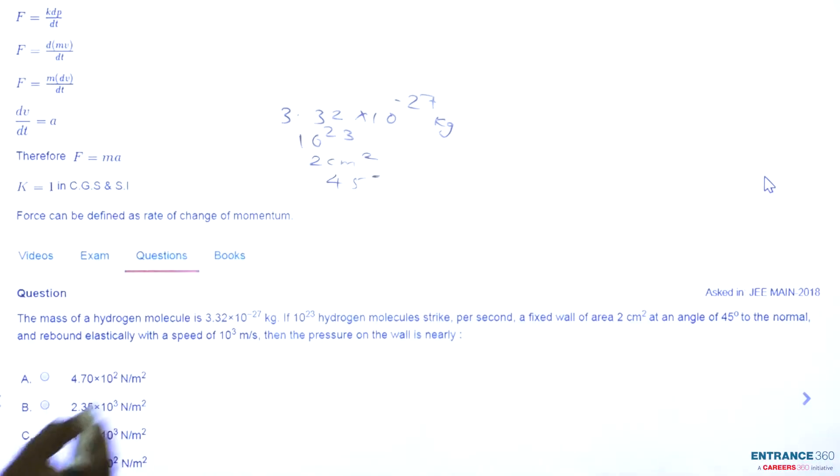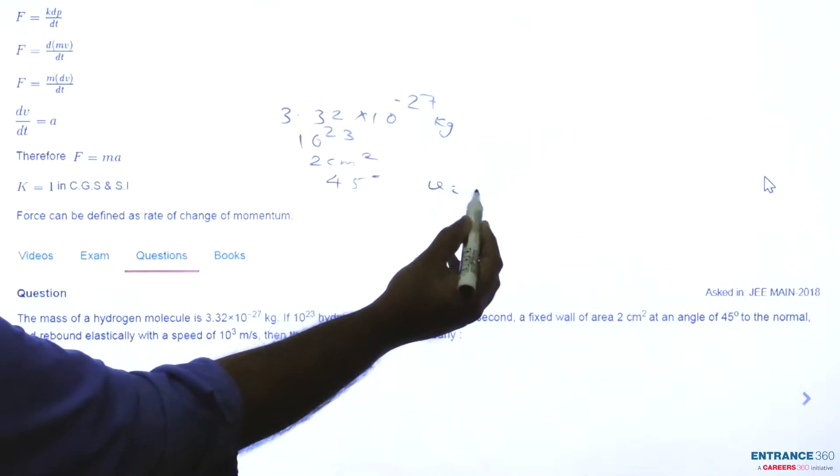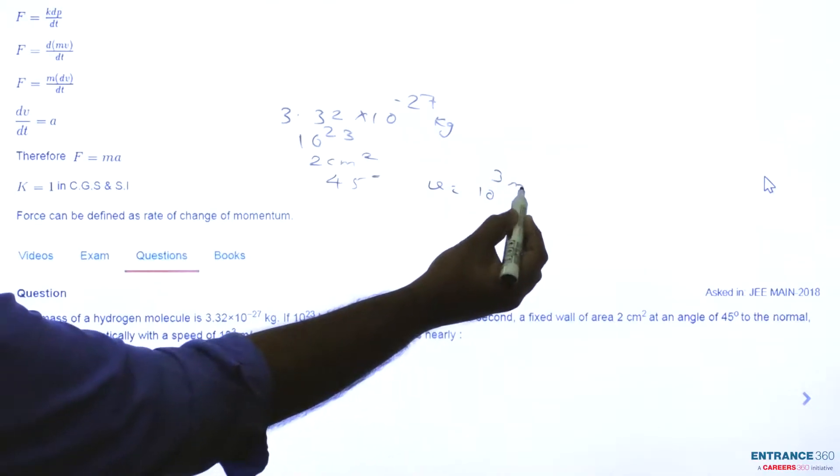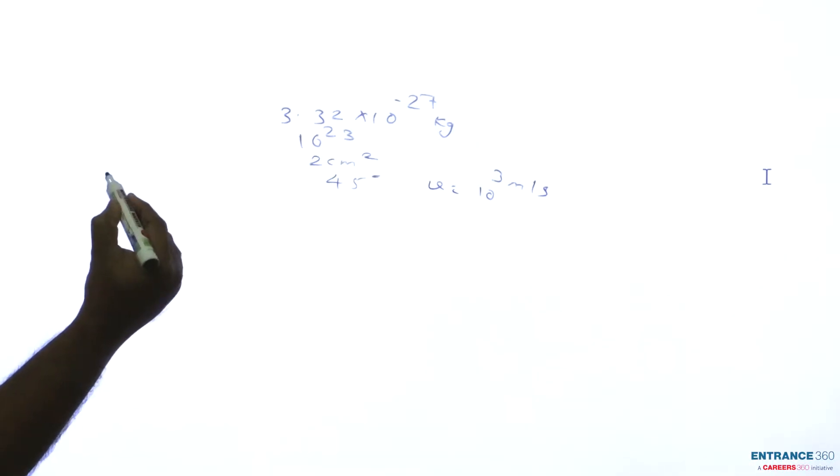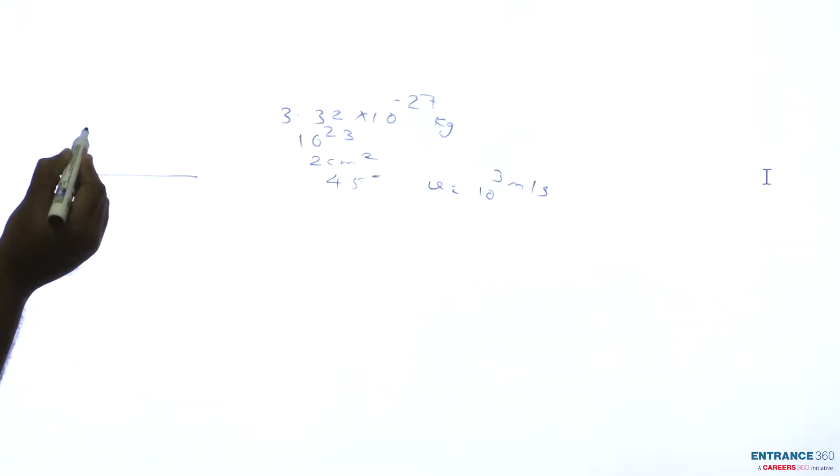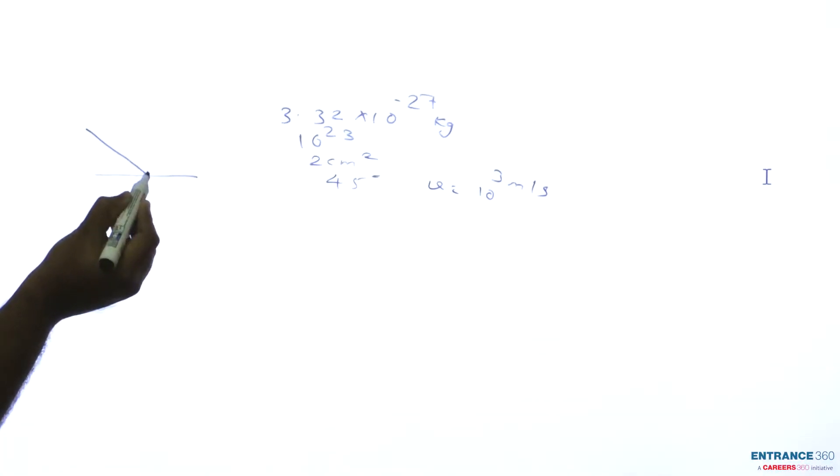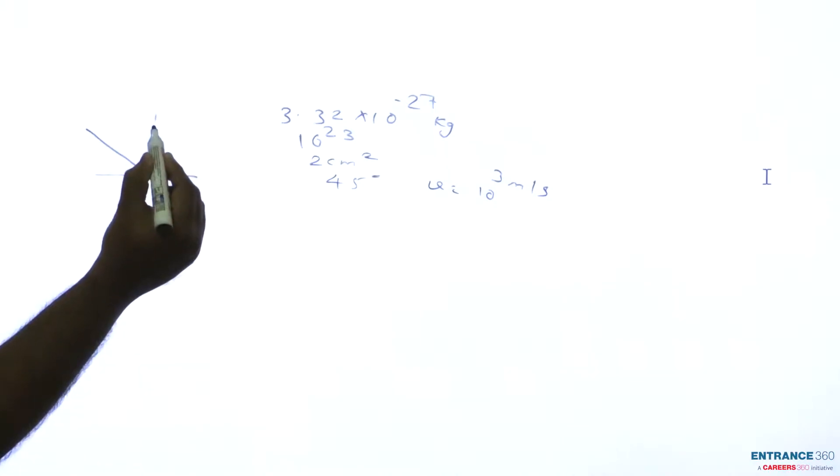To solve this question, let's draw a rough figure. The hydrogen molecule is hitting a wall at 45 degrees to the normal and rebounds with velocity 10^3 meters per second.